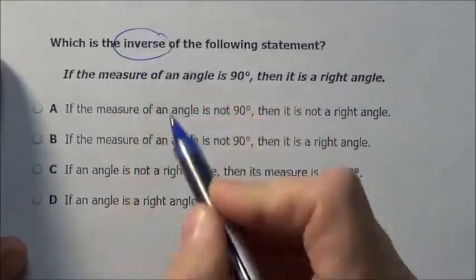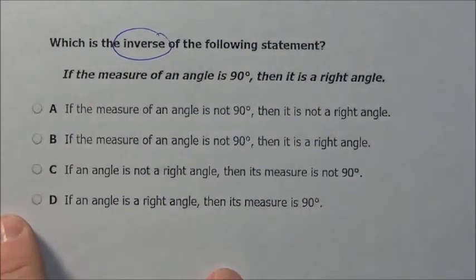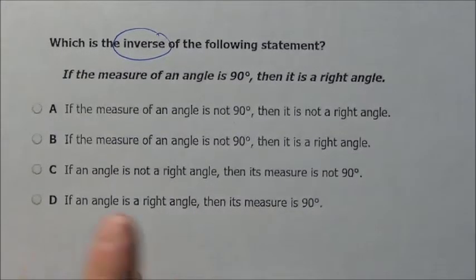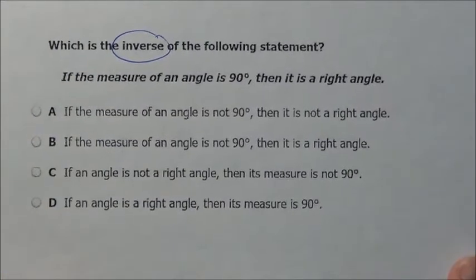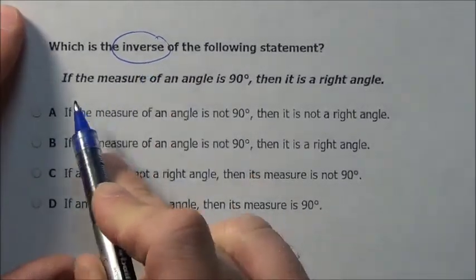Now you have to remember what the inverse is. You have converse where you take the two and you flip them. You have the inverse where you negate both of them, contrapositive where you flip them and negate them. So the converse is where we flip them, the inverse where we just leave them as they are and negate them, and then the contrapositive is where you flip them and negate them. They just want us to negate the statement.